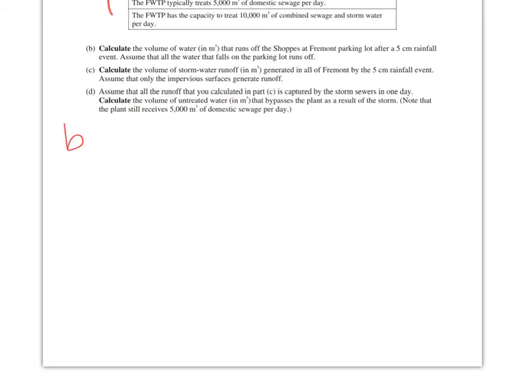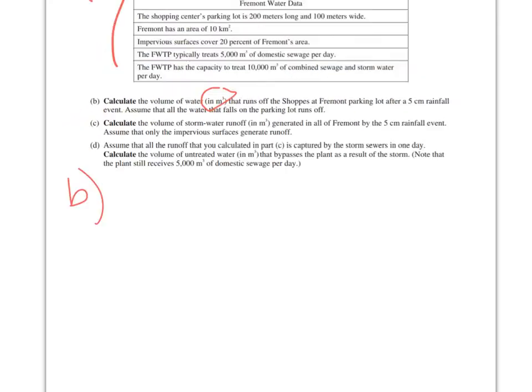So B, calculate the volume of water in meters cubed that runs off the shops at Fremont parking lot after a 5-centimeter rainfall event. Assume that all the water falls in the parking lot and it runs off. So the little key right here, the clue, is meters cubed. So you know you need to multiply together three items that are in meters to get meters cubed.